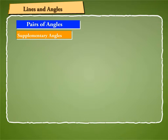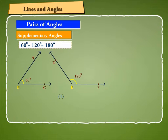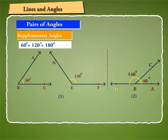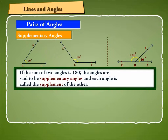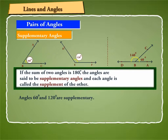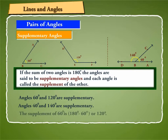Next are supplementary angles. In the first figure, angle B and angle E add up to 180 degrees. Similarly, in the second figure, angle ABC and angle DBC add up to 180 degrees. Thus, if the sum of two angles is 180 degrees, the angles are said to be supplementary angles and each angle is called the supplement of the other. Angles 60 degrees and 120 degrees are supplementary. Angles 40 degrees and 140 degrees are supplementary. The supplement of 60 degrees is 180 degrees minus 60 degrees, or 120 degrees.